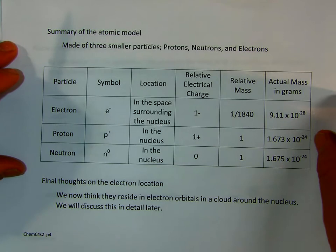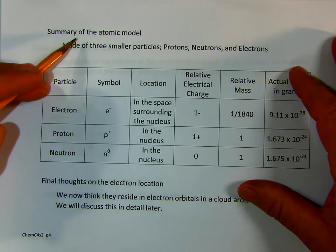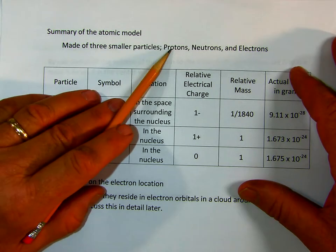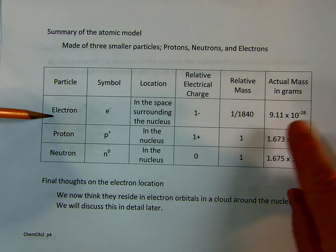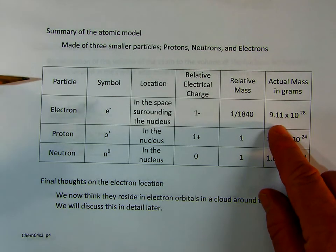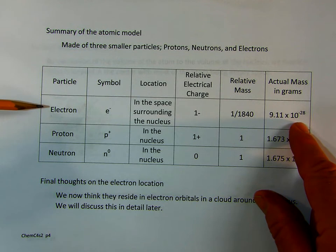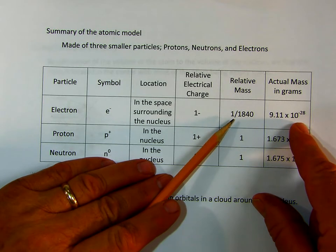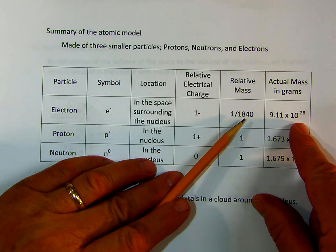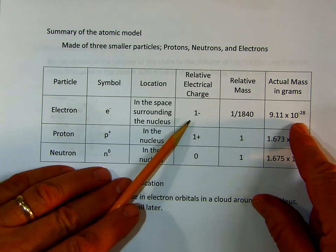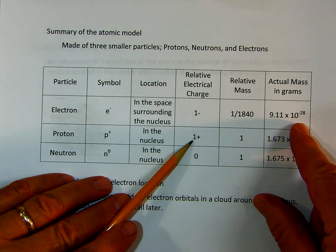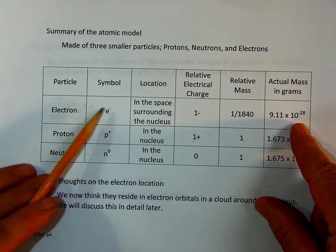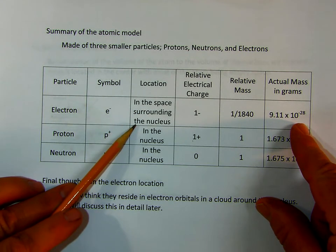In summary then, this is what we look at with the atomic model. It's made of those three particles: protons, neutrons, and electrons. The electron is the smallest. Its actual mass is 9.11 times 10 to the minus 28 grams. Its relative mass is one 1840th part of a proton. Its relative charge is one negative, which is the same charge but opposite of a proton. Its symbol is e negative, and it's located in the area around the nucleus.